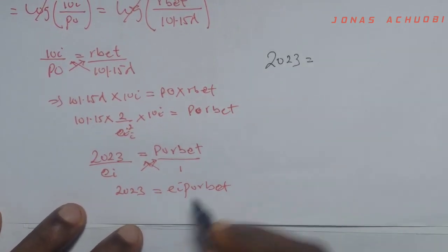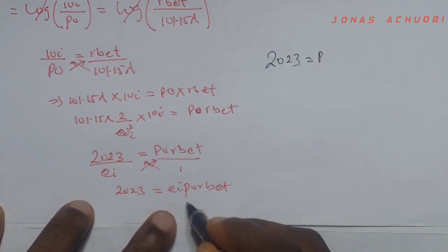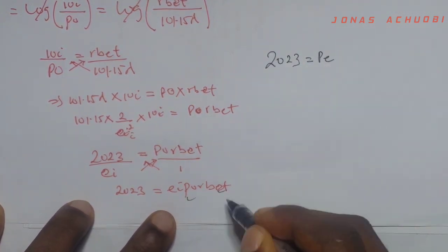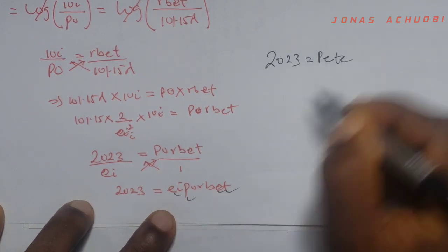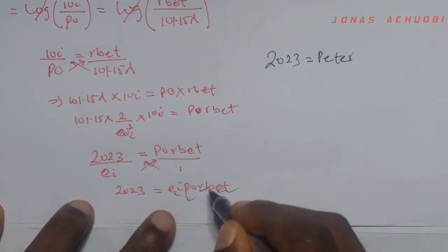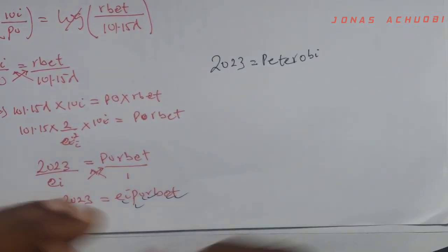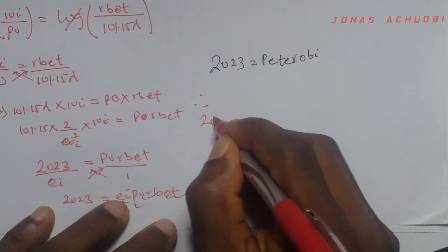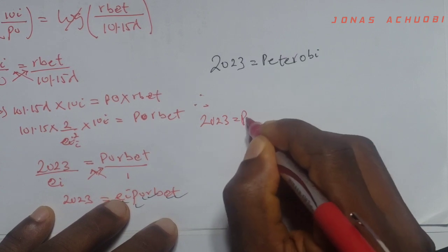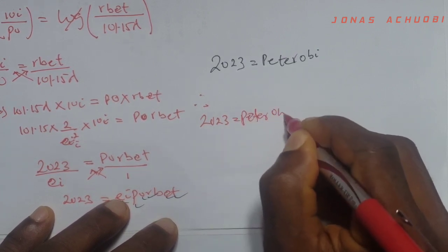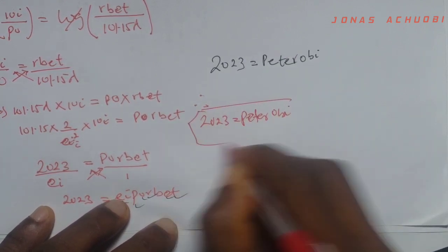I can put my p first, my e, my t, my e, my r, my o, my b, and my i. Therefore, 2023 is equal to Peter Obi. Go get your PVCs.